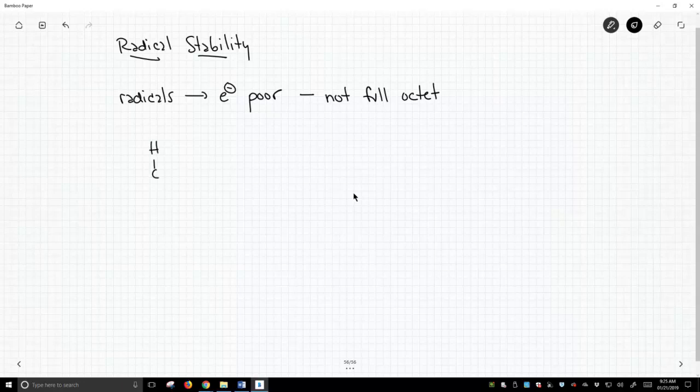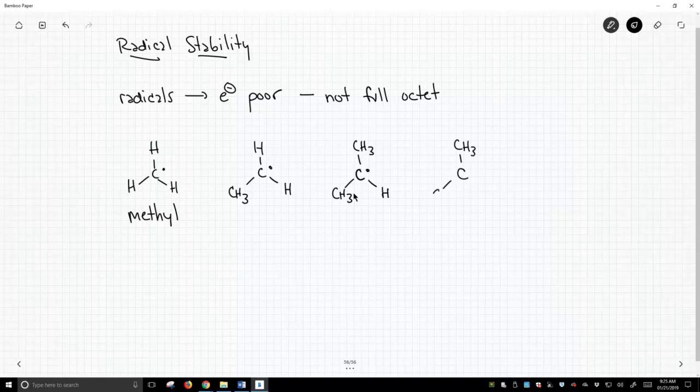So, here is the methyl radical. And of course, we can put additional substituents on here. And let's keep going. Of course, these don't have to be methyl groups. These could be ethyl groups. They could be whatever you want. But, as always, methyls are our friend because they make it quick to draw, and they simplify everything.